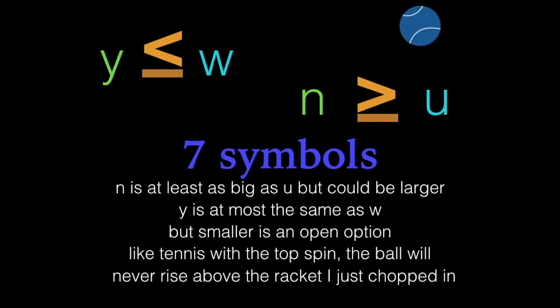Check what we're conveying. N is at least as big as U but could be larger. Y is at most the same as W but smaller. It's an open option, like tennis with the top spin. A ball will never rise above the racket I just chopped in.